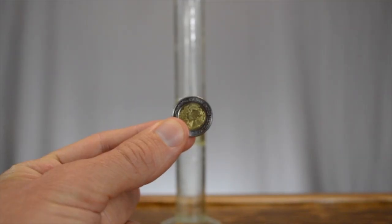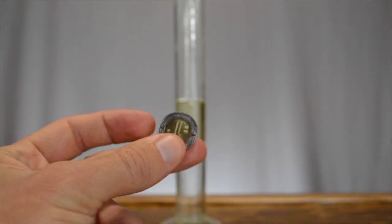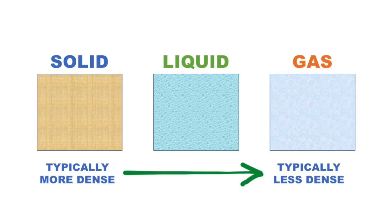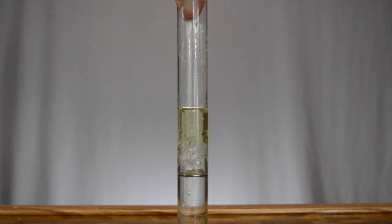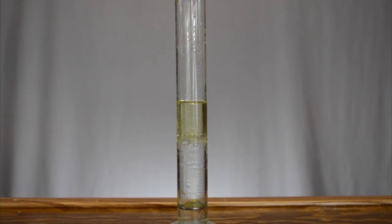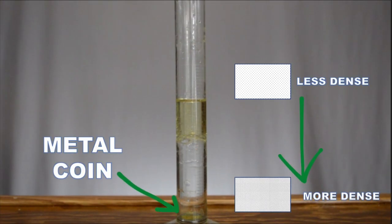This coin is made of metal. Metal is usually a solid at room temperature and typically solids are more dense than liquids. What will happen when I drop this coin into the oil and water mixture? It sinks because metal is more dense than oil or water.